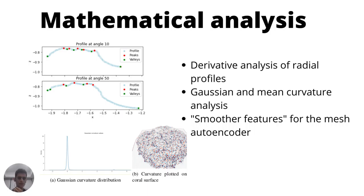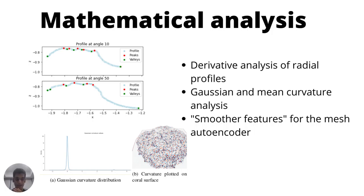Broadly talking about the mathematical analysis, we get gradients of the radial profiles of the corals from the lidar scans, and this allows us to compare the local minima and maxima — the peaks and valleys — of two different profiles. We also compute Gaussian and mean curvature of the entire coral surface. These act as smoother features that the mesh autoencoder can take and work with.